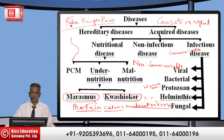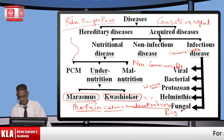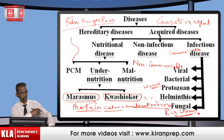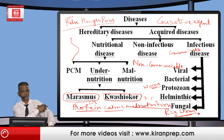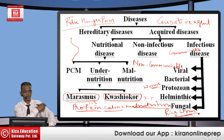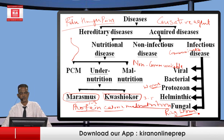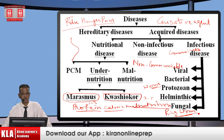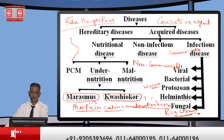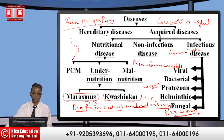Among fungal diseases, ringworm disease — also called athlete's foot — shows a round colored patch that appears on the body and keeps spreading if not treated. This is caused by a fungus called Tinea.